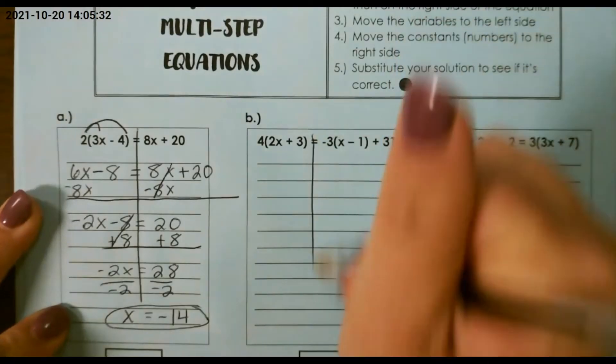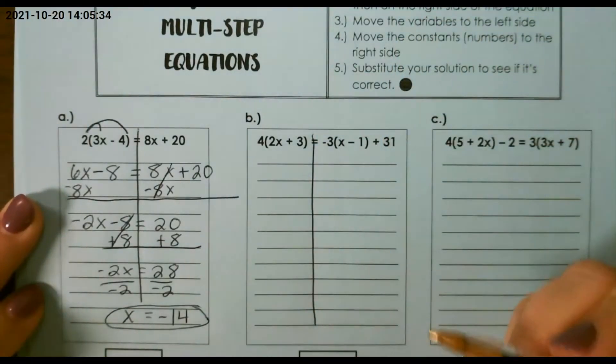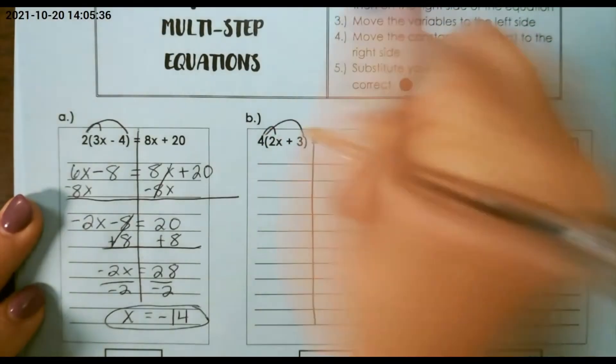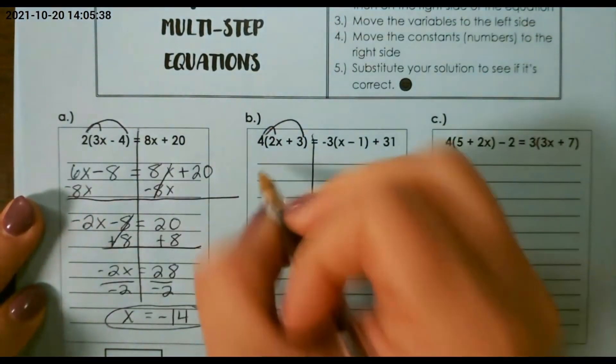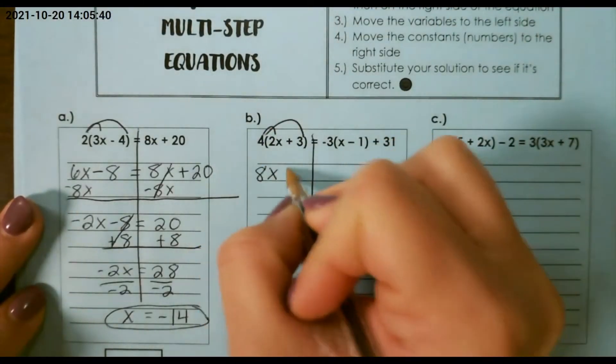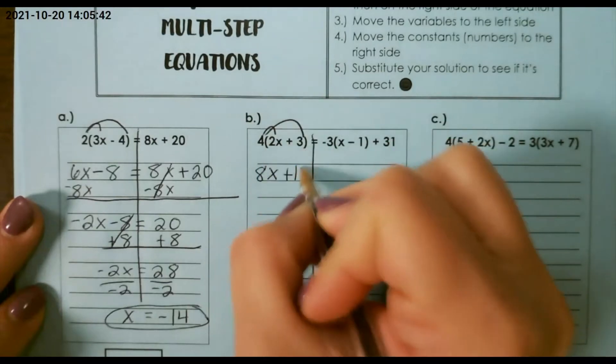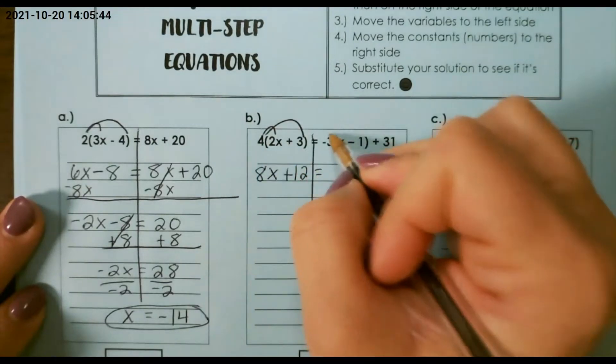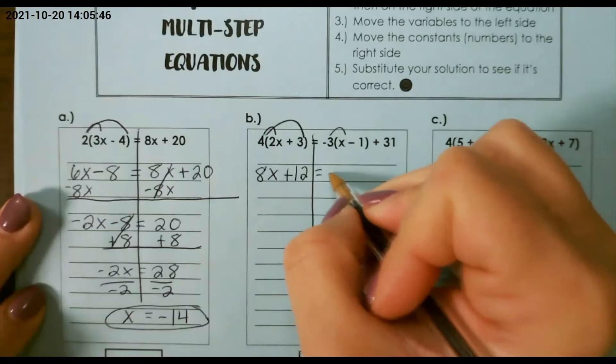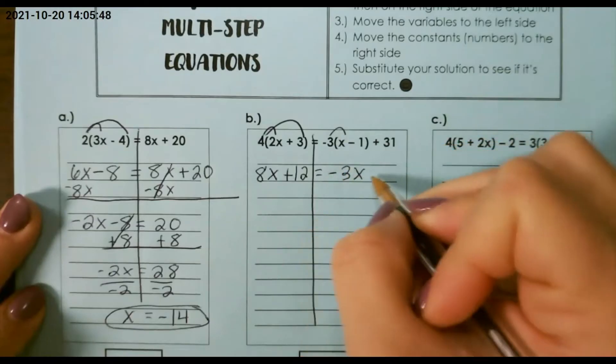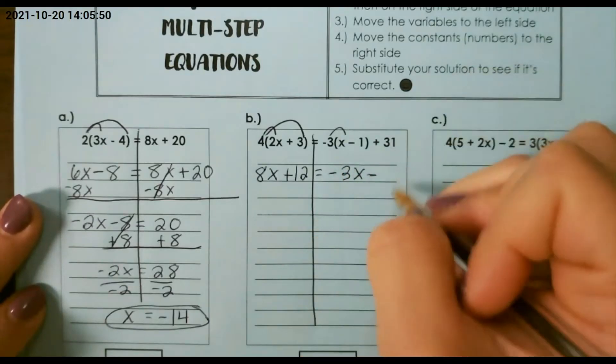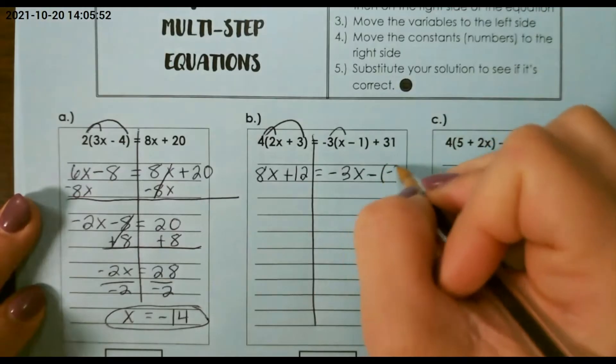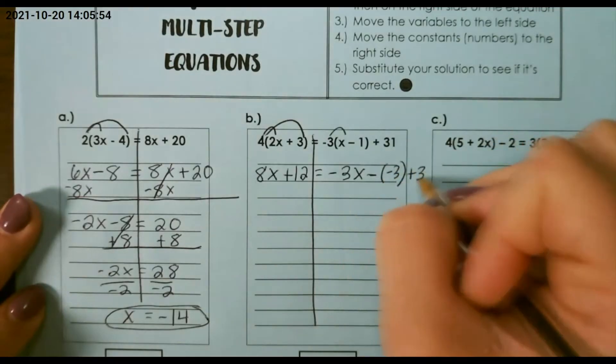For our next example, we have distributive property on both sides. So I'm going to distribute on the first side, 4 times 2x is 8x, plus 4 times 3, which is 12. Then, negative 3 times x is negative 3x, subtraction sign in the middle, and negative 3 times 1 is negative 3, plus 31.